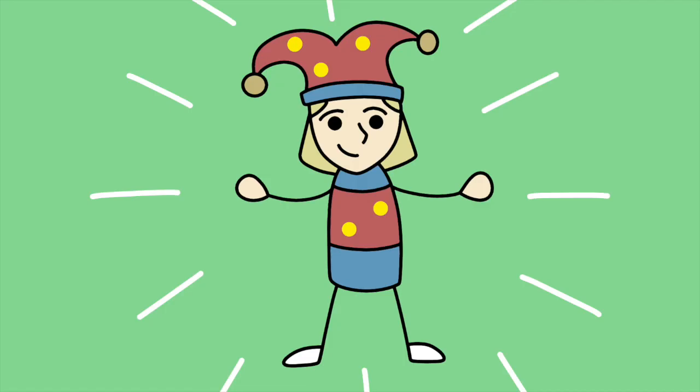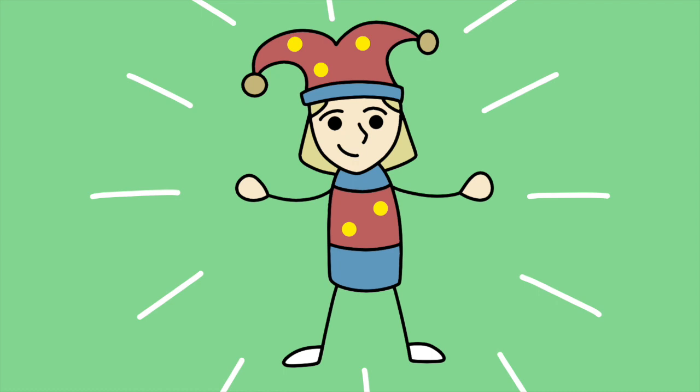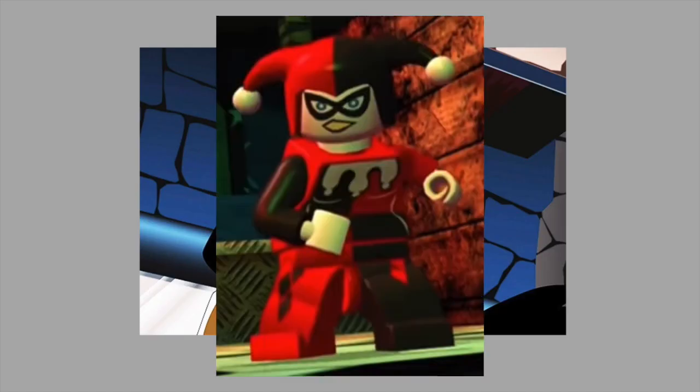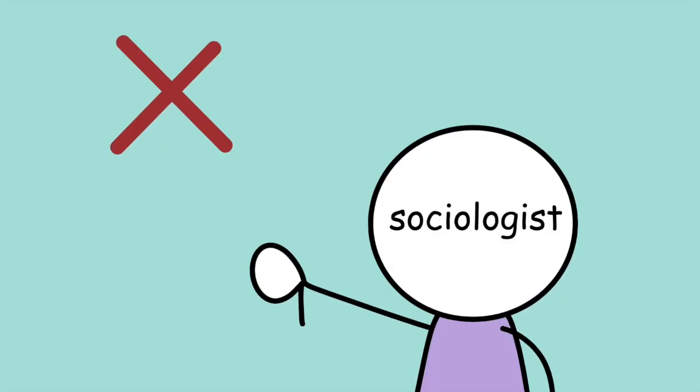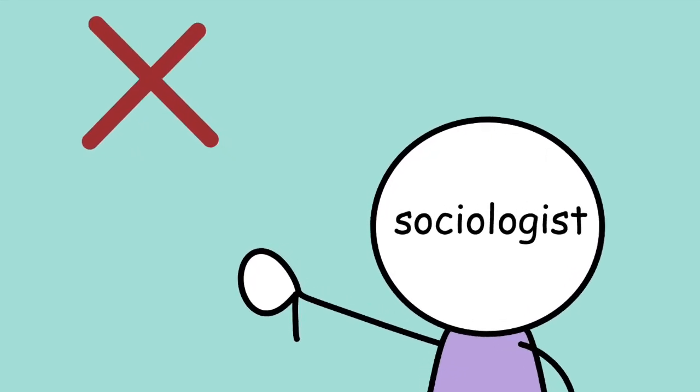Quick disclaimer before we start, Erasmus writes the book from the perspective of Folly who he portrays as a woman in your classic jester outfit, but probably not looking like this. So when the quotes I use are in the first person, it is Folly that's speaking. So let's start here. Let's start with the idea that society is composed of relationships between individuals. Seems fine enough, maybe some big brain sociologist might disagree, who knows.